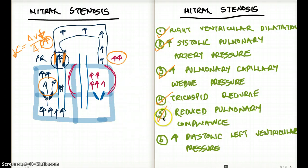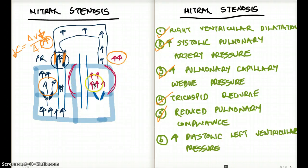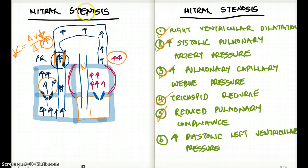Now what is NOT going to happen? There will not be any effect on the left ventricle — the left ventricle is going to be normal. What about the aortic valve? It's going to be normal. Since the pressure is not affecting the left ventricle and not affecting the aortic valve, these are going to be normal.